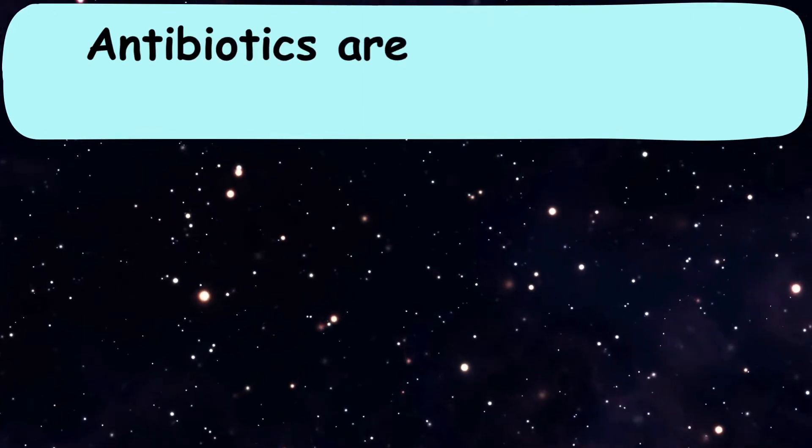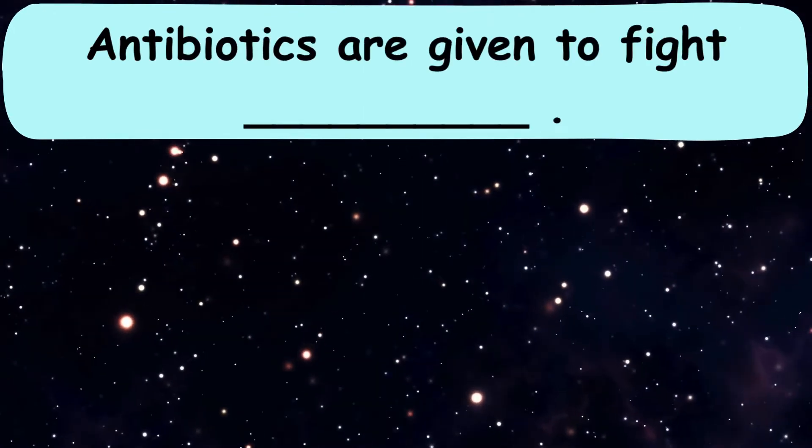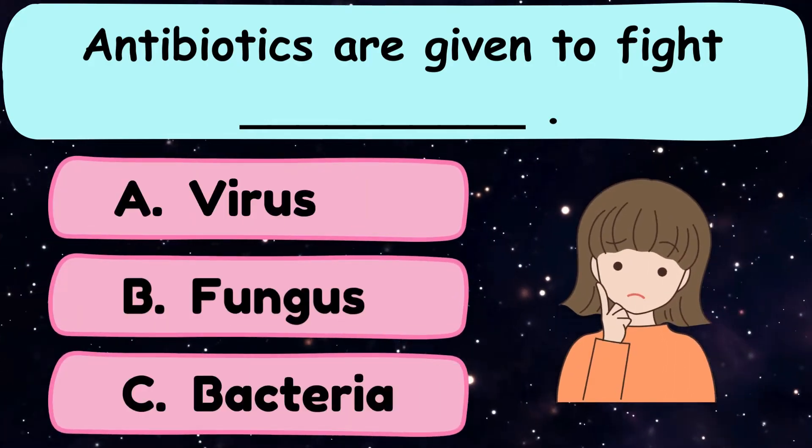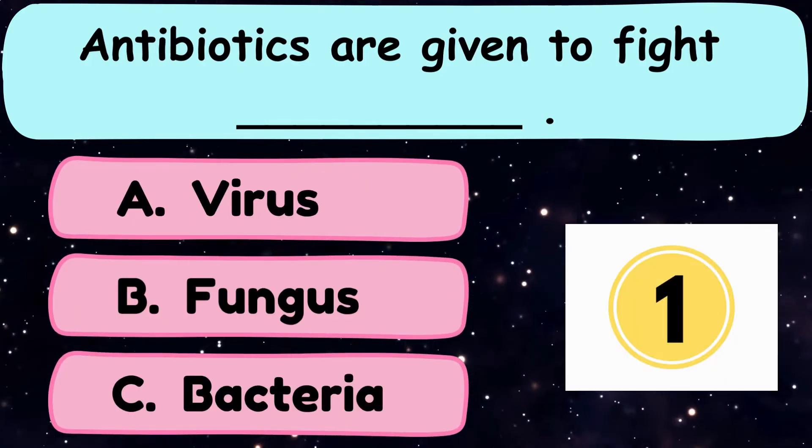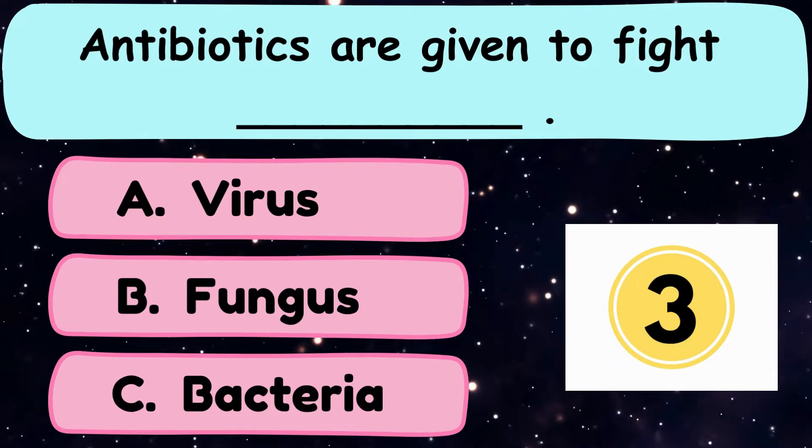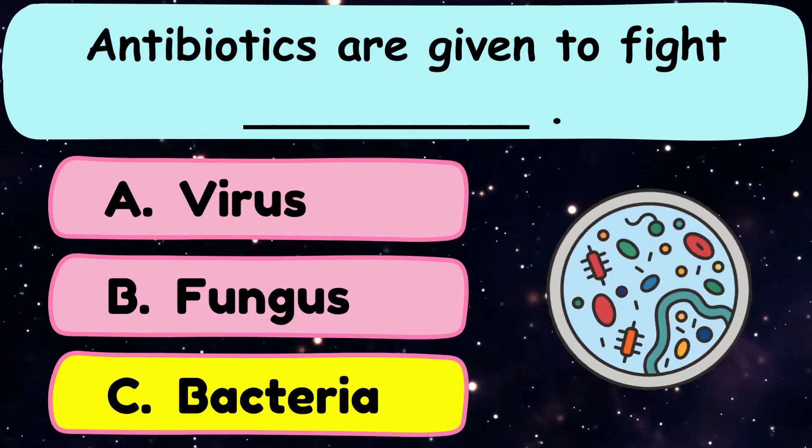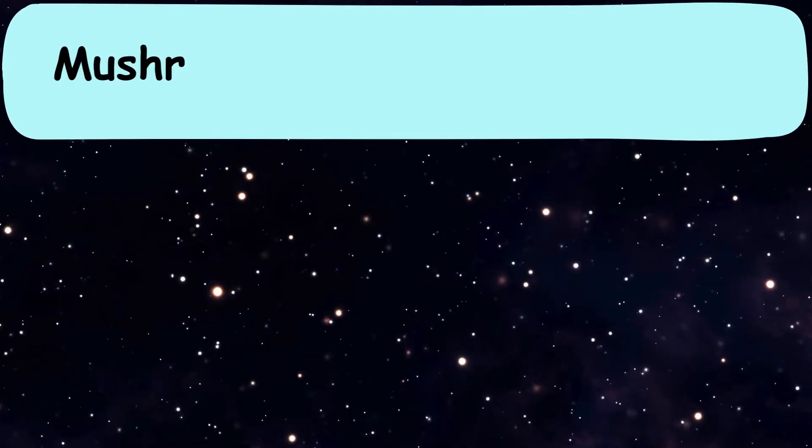Question number 8. Antibiotics are given to fight dash. A. Virus, B. Fungus, or C. Bacteria? The correct answer is option C. Bacteria.